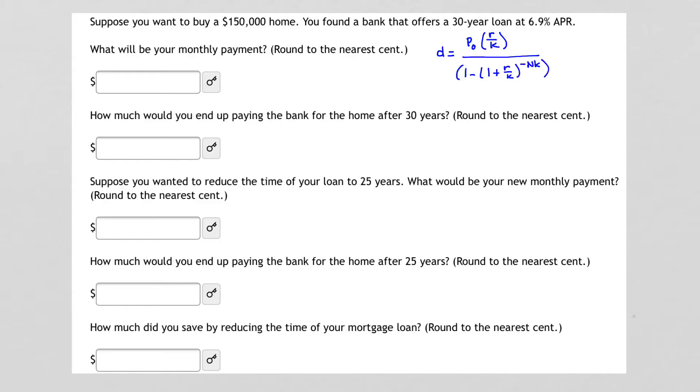This is our loan formula or payout annuity formula that gives us our monthly payments. Now, based on this formula, our P sub 0 is our loan amount, which is going to be $150,000. Our R value is 0.069. Our K value, well, because we're paying monthly, that's going to be 12 because we pay 12 times a year. N is the number of years, and that's going to be 30. And N times K, well, that's simply 30 times 12, or 360.